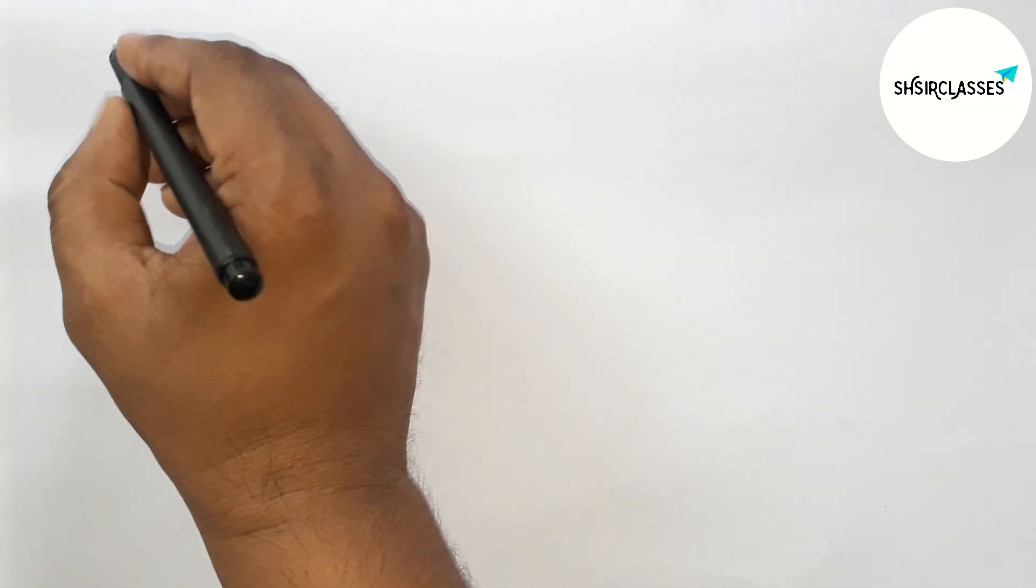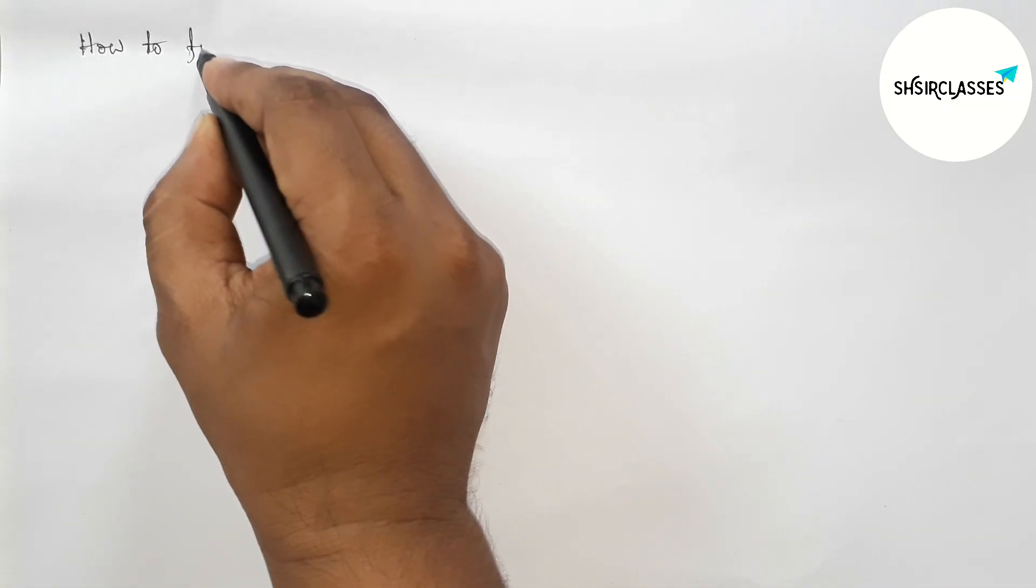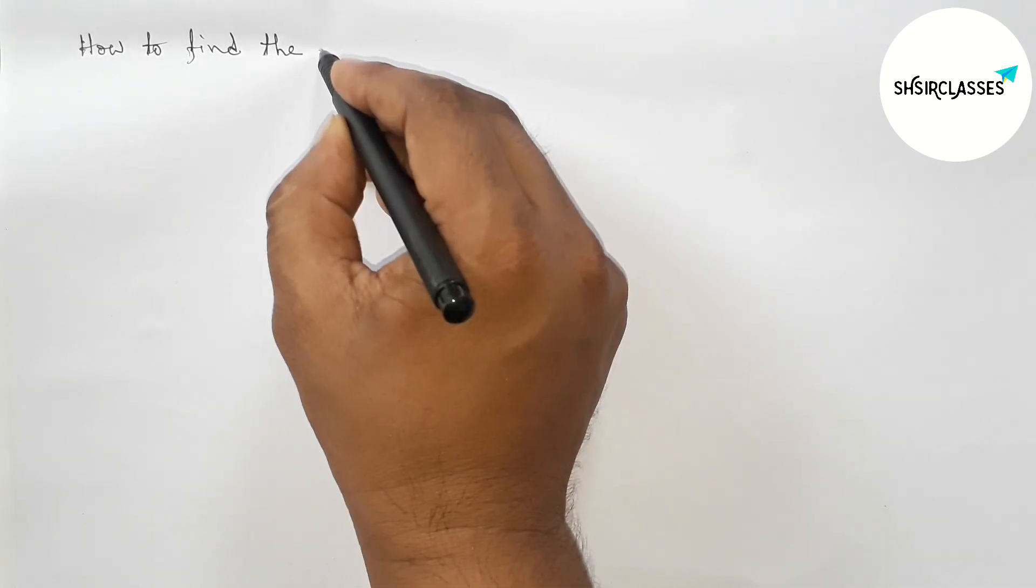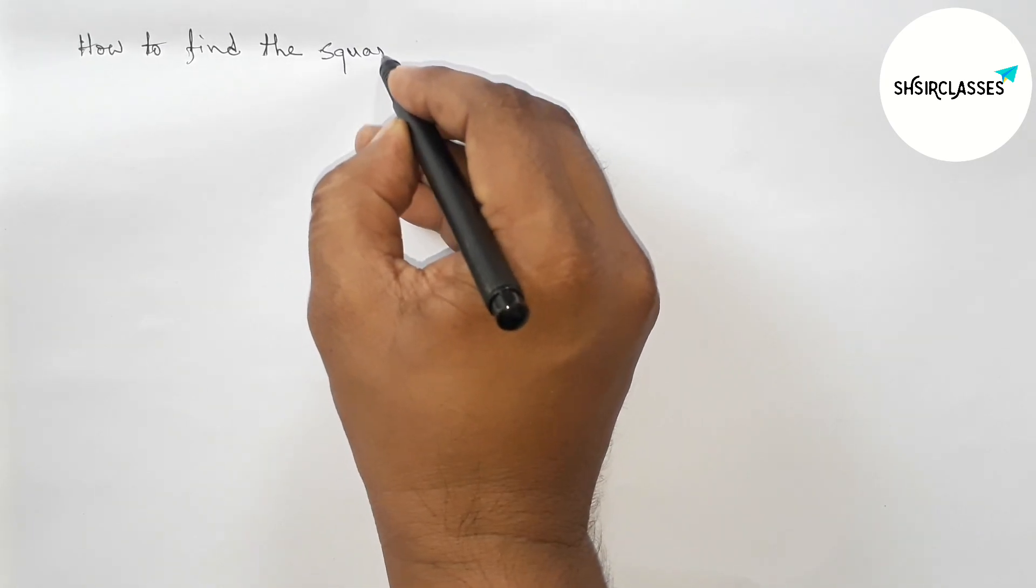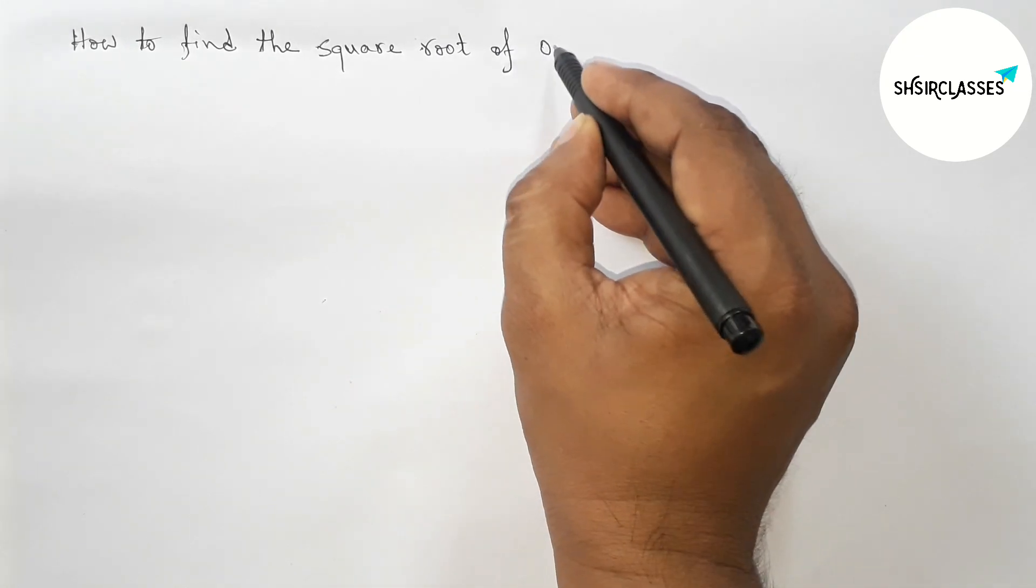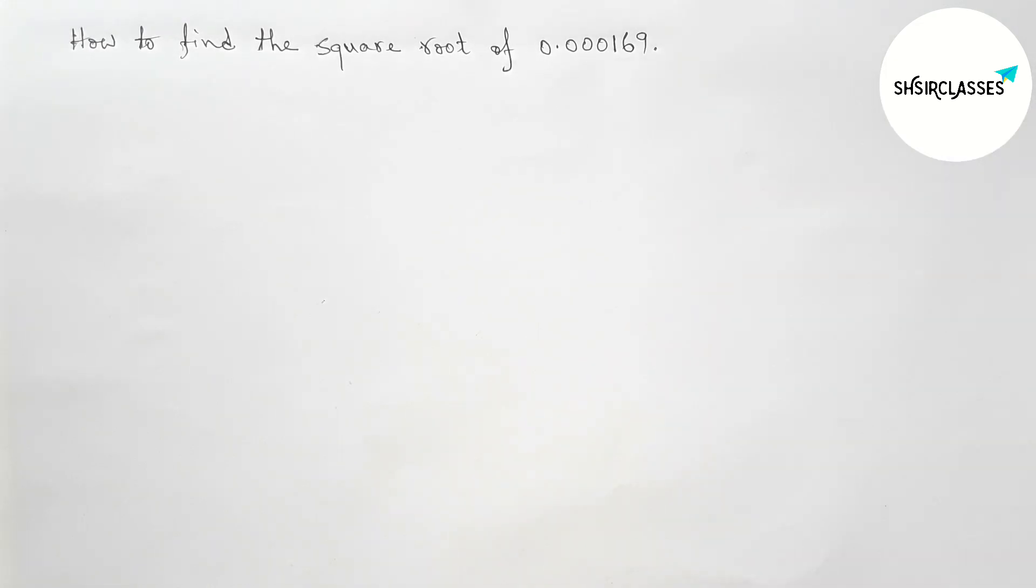Hi everyone, welcome to S Share Classes. Today we're finding the square root of a decimal number. Here's how to find the square root of 0.000169 in an easy way. Please watch the video till the end. Let's start the video.